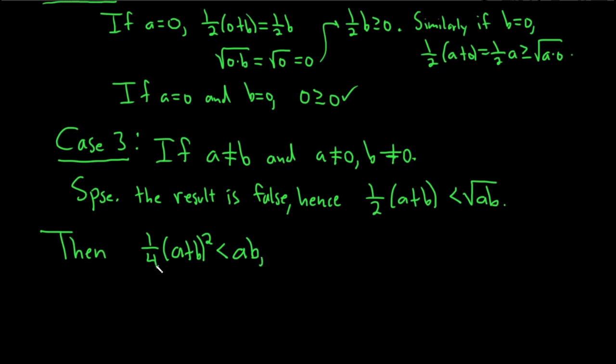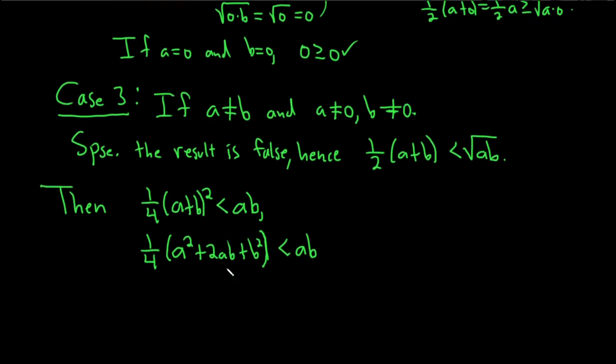Let's multiply this out. We have 1/4(a²+2ab+b²), where you square the first one, multiply a and b and double it, and then square the last. This is less than ab. Let's multiply by 4. So we have a²+2ab+b² less than 4ab.